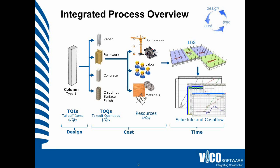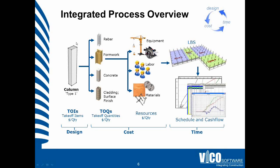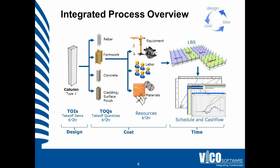So just for those who are new to the VicoOffice platform, a quick overview of the integrated process. When you work with VicoOffice, you publish your building information models from your authoring platform of choice into the VicoOffice database. After you've done that, you activate the model. At that point, we create groups of similar elements — so in this example, we put all columns of type 1 in one group. We call those groups takeoff items.